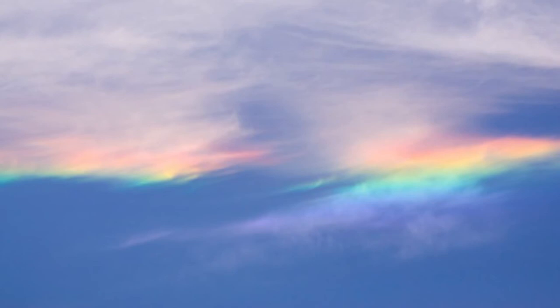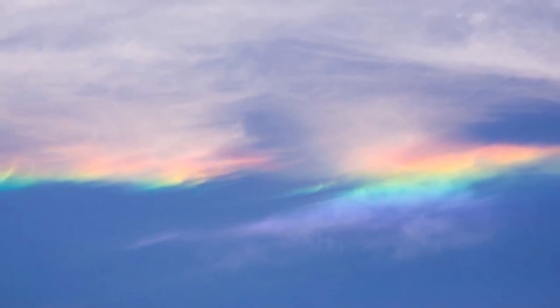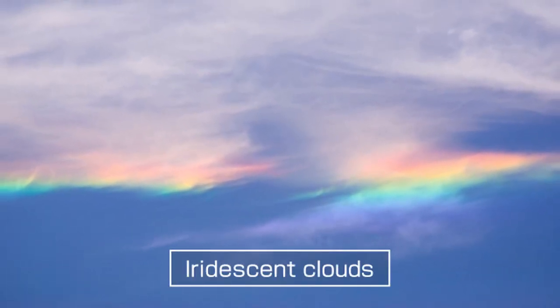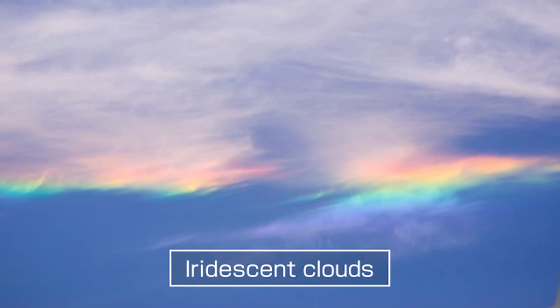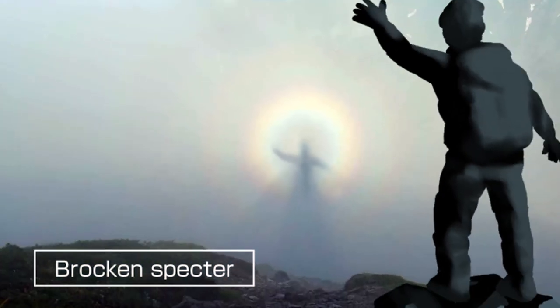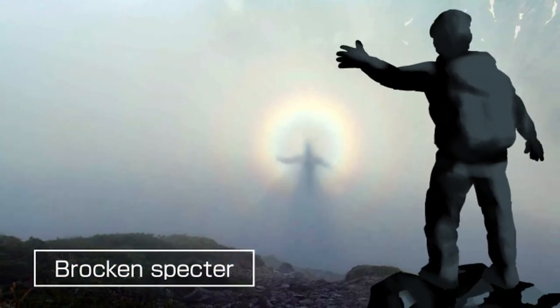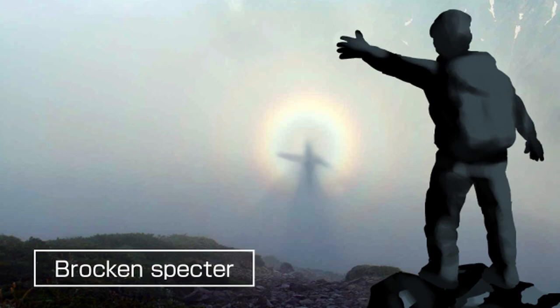Diffraction also creates some other fascinating phenomena. With iridescent clouds, irregular shapes around the edges of high clouds are colored. Another is the brocken spectre, in which sunlight coming from behind you creates a corona around your own shadow.